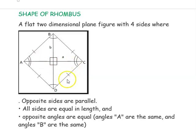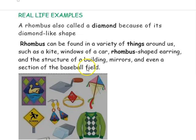Opposite angles are equal and the diagonals meet at the center point, forming a 90-degree angle.